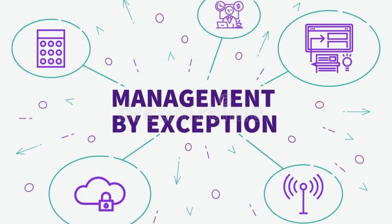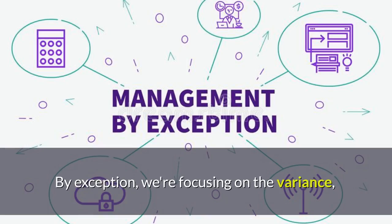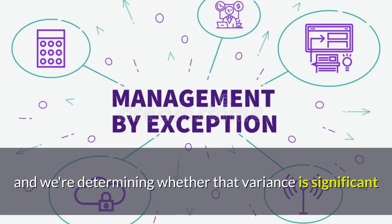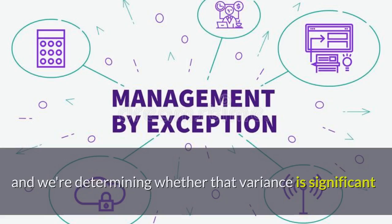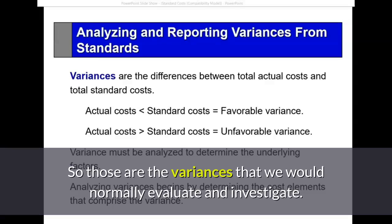Again, this is management by exception — we're focusing on the variance and determining whether that variance is significant or material. The material variance would be anywhere between 3 and 5 percent. Those are the variances we would normally evaluate and investigate.